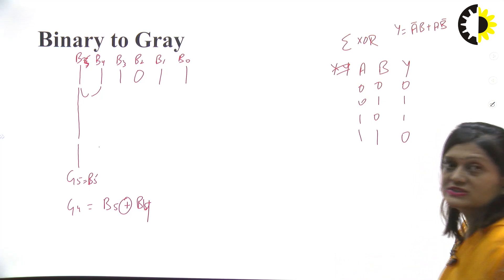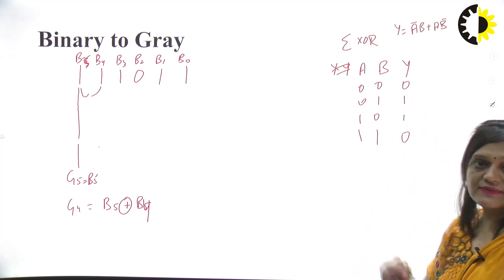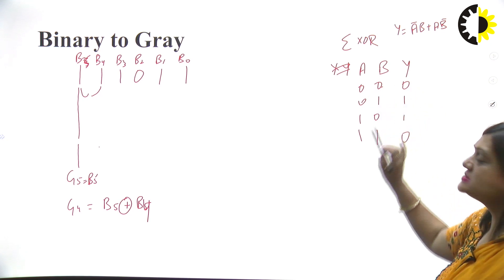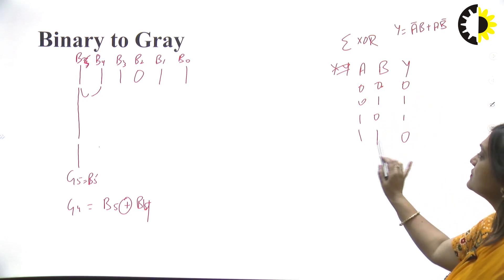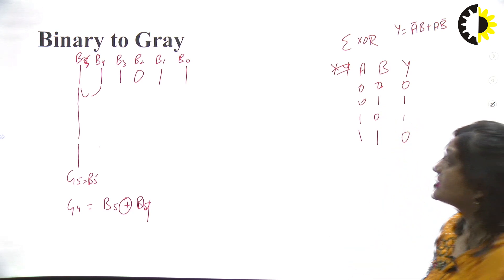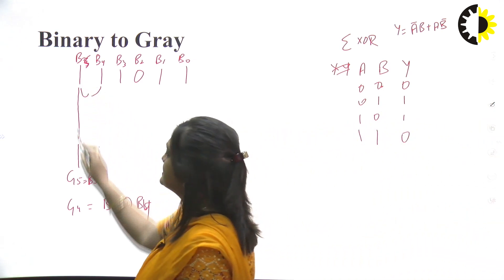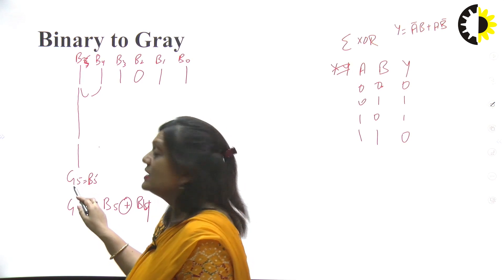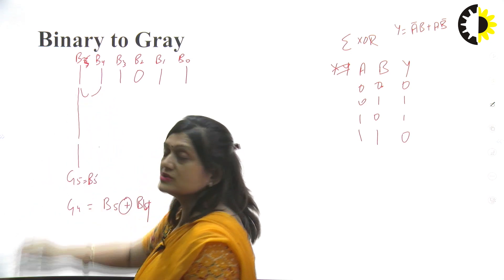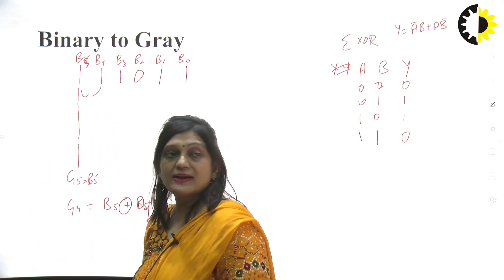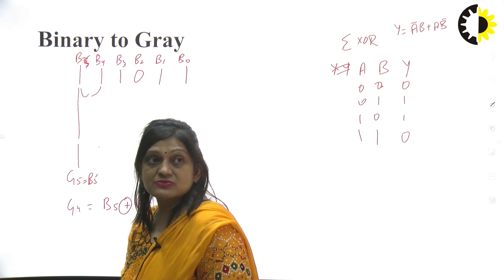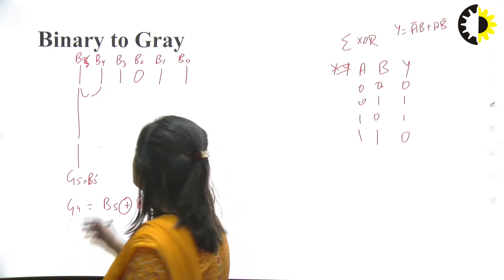According to the XOR gate expression A̅B + AB̅, if both bits are the same the output is 0, and if the two bits are different the output is 1. Here B5 is 1 and B4 is 1, so G4 = B5 XOR B4 = 1 XOR 1 = 0.